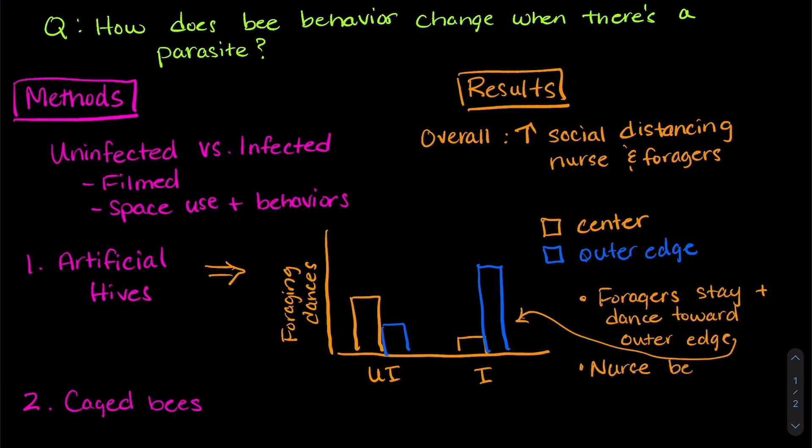Another thing they saw in this experiment was that nurse bees were closer to the center, which means that allo grooming behaviors increased towards the center as well.